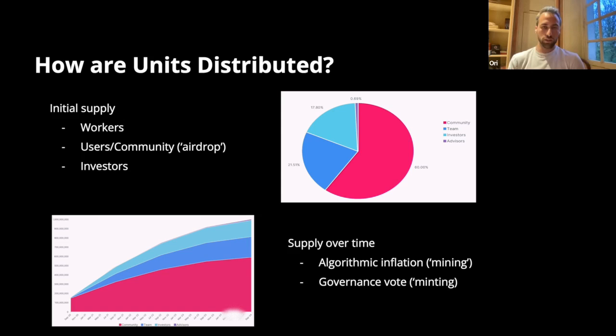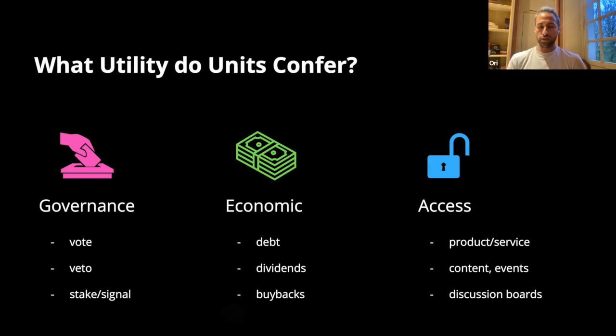What are the units actually used for? In the joint stock company context we're familiar with the first two: if you have enough stock, like Tesla stock, you can vote in corporate decisions, and if the company gives out dividends, you have a share of the profit. But with crypto units you also have the ability to programmatically gate access to certain services, goods, content, discussion boards, and even physical or virtual events through possession of the token.